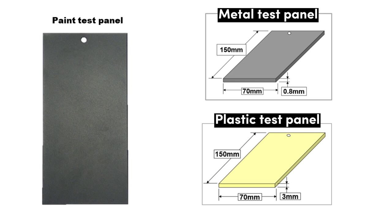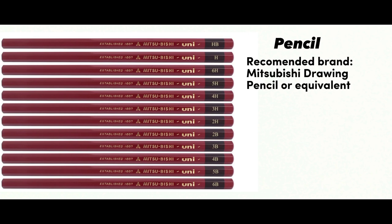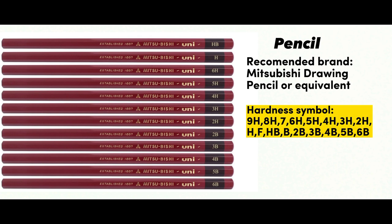it must be 150 by 70 by 0.8 mm. The second material needed to prepare is the pencil. Recommended brand is Mitsubishi drawing pencil or equivalent. Hardness symbol is 9H to 6B, with 9H being the hardest and 6B being the softest.